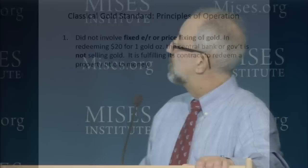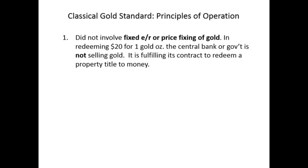So here are some principles of operation. As I pointed out, no fixed exchange rate — just one money under the gold standard. Which is supposedly the Keynesian dream — well, it was right in front of them, or right behind them. That's what we had in the 19th century: we had one world money, though in the Far East they used silver more than gold.